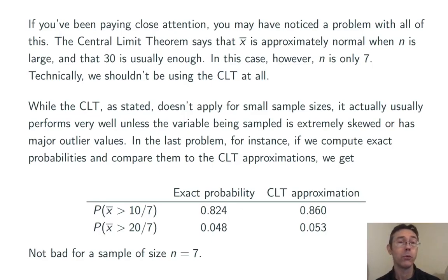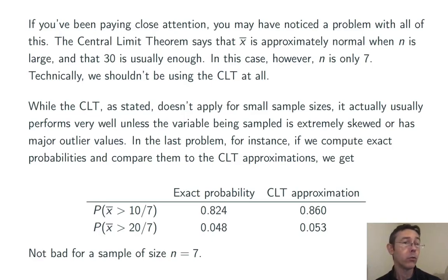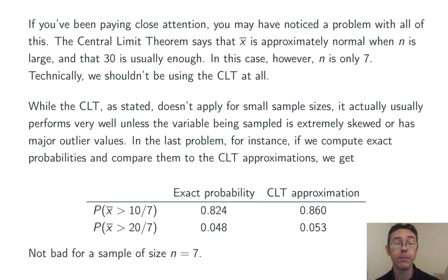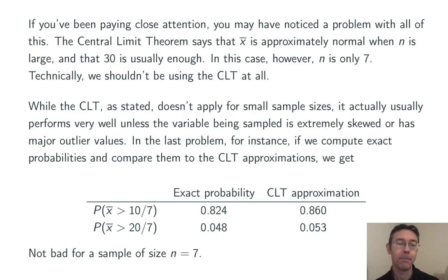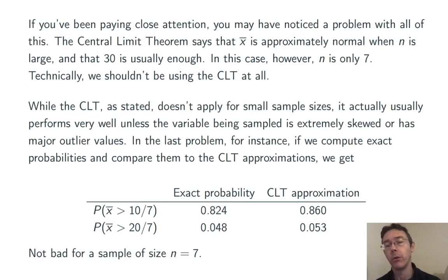To illustrate the fact that the CLT performs pretty well, I went back and computed the probabilities exactly using the original probability histogram. The exact probability that the total number of accidents in a week was greater than 10 was 0.824, compared with the CLT approximation of 0.860 — not too bad. Similarly, the exact probability of getting more than 20 accidents in a week was 0.048, as opposed to the CLT approximation of 0.053. Both of these are amazingly close given that the sample size was only 7 and the distribution showed a fair amount of skew.